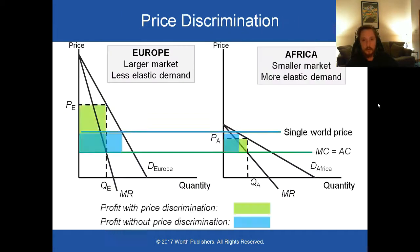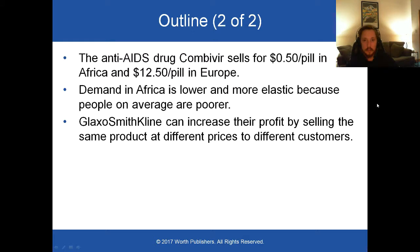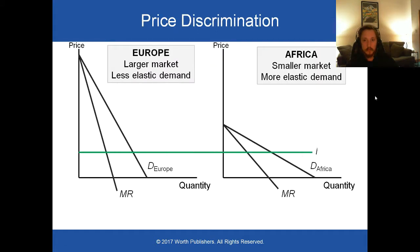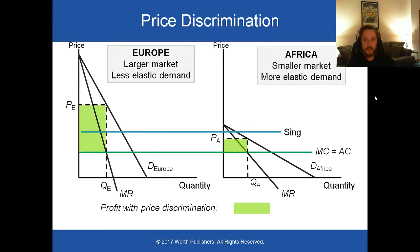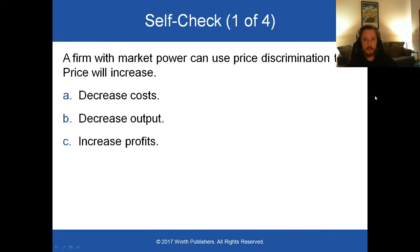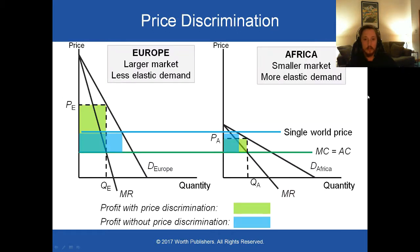Let's go all the way back to the beginning of the chapter and take a look at this. We see that with price discrimination, the total quantity sold is actually greater. See this here?